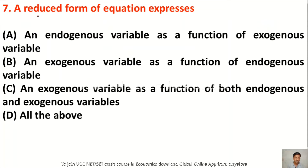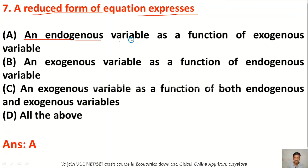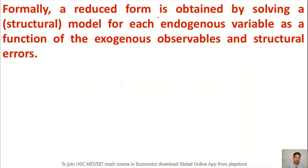Question 7: A reduced form of equation expresses — option A an endogenous variable as a function of exogenous variables, option B an exogenous variable as a function of endogenous variables, option C an exogenous variable as a function of both endogenous and exogenous variables, option D all of the above. Option A is correct. Formally, a reduced form is obtained by solving a model for each endogenous variable as a function of exogenous variables.